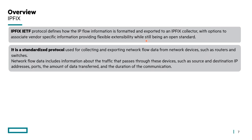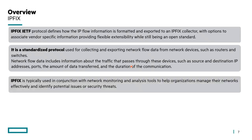IP fix is a standardized protocol used for collecting and exporting network flow data from network devices such as routers and switches. It captures traffic characteristics of IP flows passing through devices — including source and destination IP, the 5-tuple port information, volume of flow (transmitted and received bytes as a minimum), and duration of the communication. This data is ingested into monitoring devices to identify potential issues and security threats.